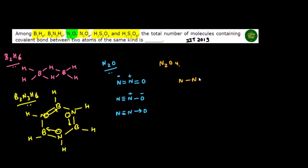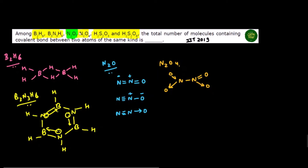If you look at N2O4, the structure has a dative bond, double bond O on each nitrogen, and a nitrogen-nitrogen bond in the middle — as studied in P-block chemistry. Here also nitrogen-nitrogen bond is present between same elements, so this is also our answer.